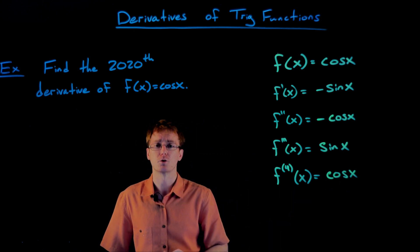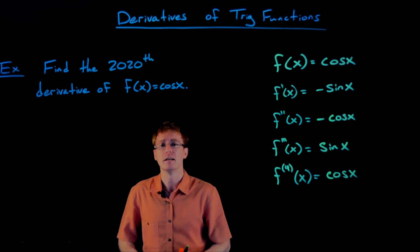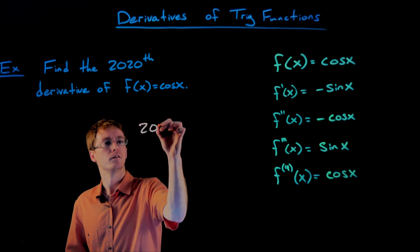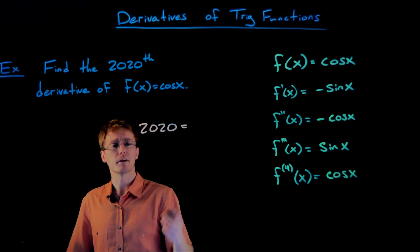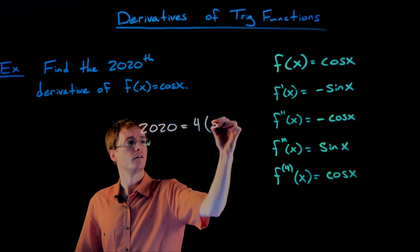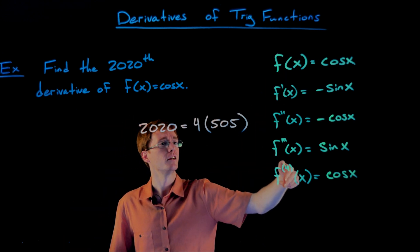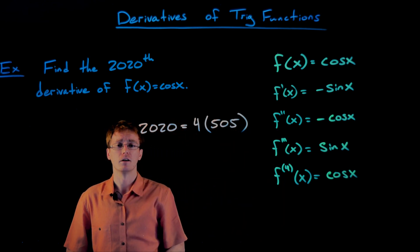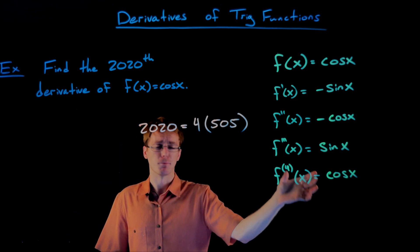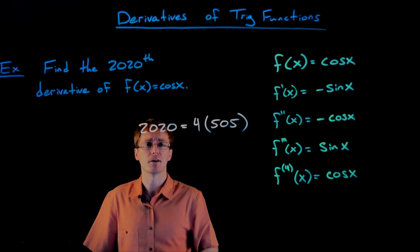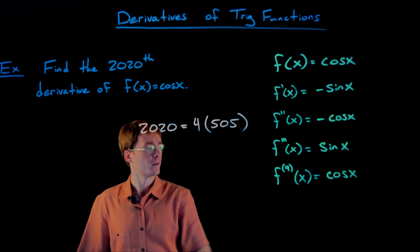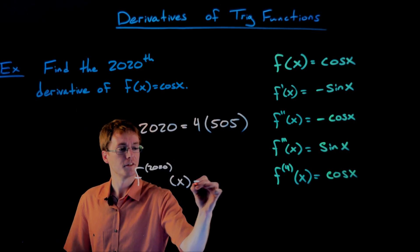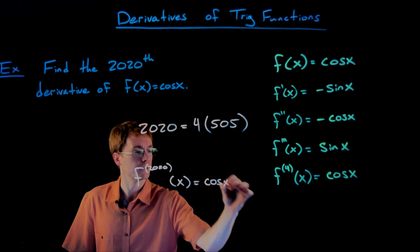We don't need to count all the way up to 2020 — there's a quicker way. We think of 2020 as some multiple of four. In fact, 2020 is exactly four times 505. Running through our list 505 times, we get right back to where we started. So since 2020 is a multiple of four, the 2020th derivative of our cosine function is still cosine of x.